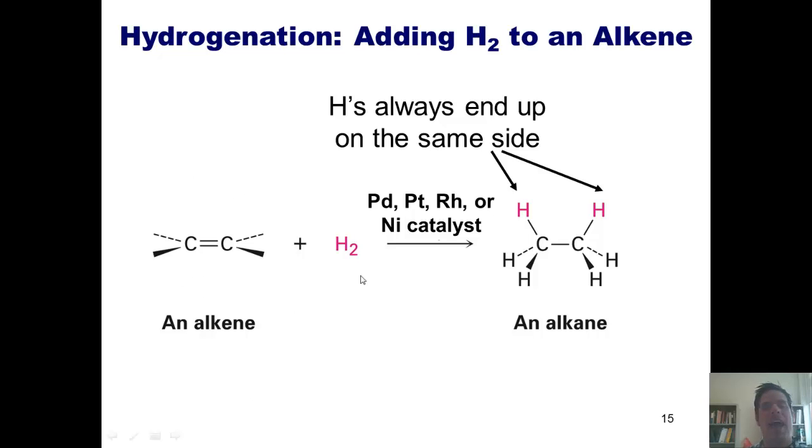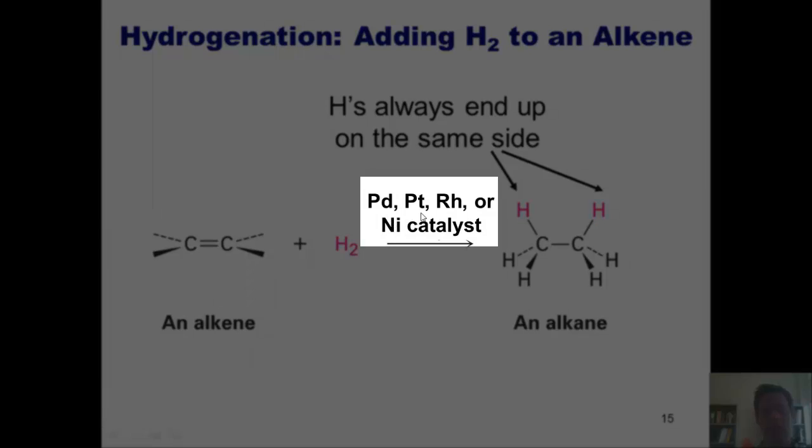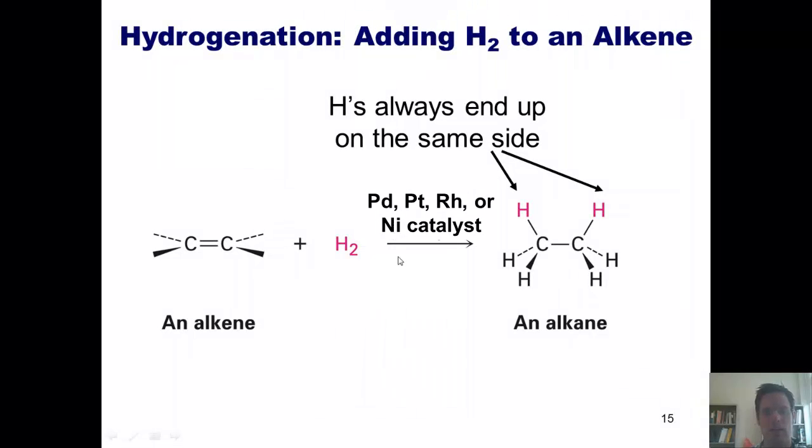If I take an alkene, it can be any alkene, and I treat it with hydrogen gas, H2, and a metal catalyst. Now, it has to be one of these four metals: palladium, platinum, rhodium, or nickel. What it does is it will turn my carbon-carbon double bond into a carbon-carbon single bond and add these two hydrogens on top. So each of these carbons gains a bond to a hydrogen.